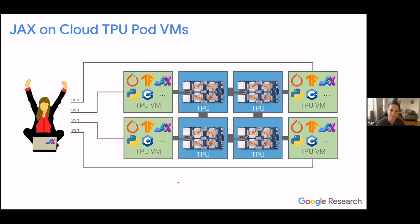This of course scales up to pods. When you're running on a pod or a pod slice — which is a subset of a pod — you just have more hosts, so more VMs that you connect to. Again, you can run whatever you want on these pod VMs.